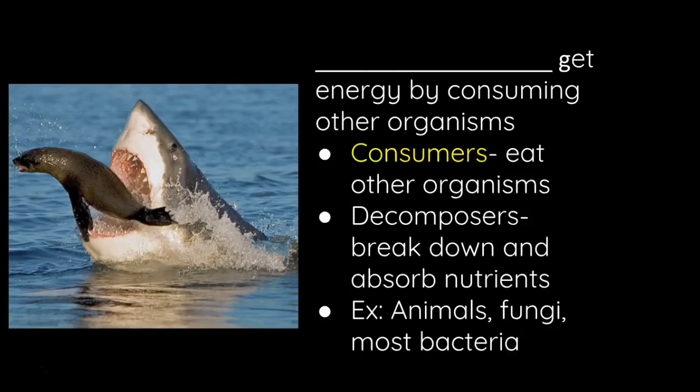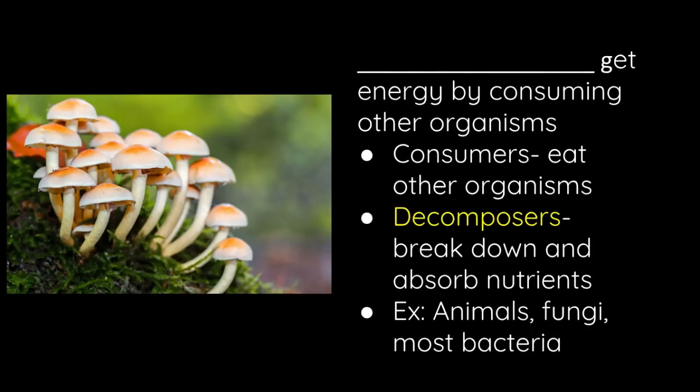Others don't make their own food — they consume it, so we have heterotrophs. Consumers eat other organisms, like the great white and the seal right here. Decomposers are going to absorb their chemical energy. They break down with absorption, and they take in that energy. Those are also called heterotrophs.